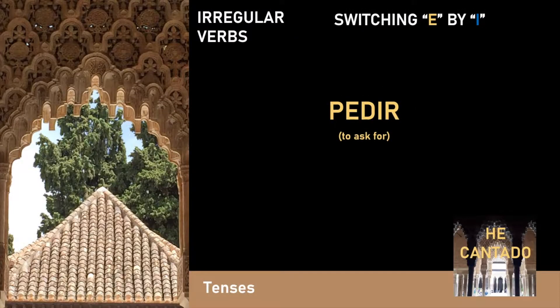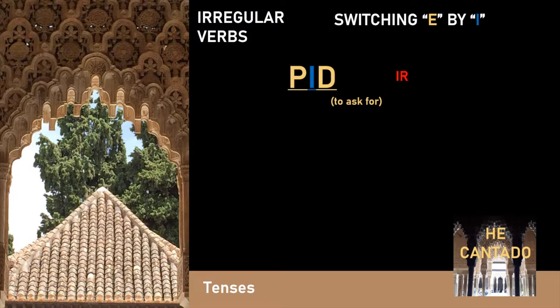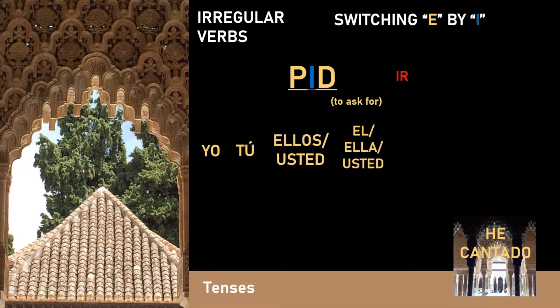Let's see the case in which an E is being replaced by an I, for example, like in the verb pedir. The verb pedir is in the category in which the E is being replaced by the I. In this case, pedir means 'to ask for', and the E is being replaced by the I in the root.